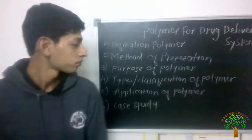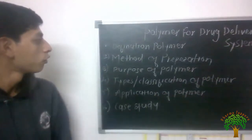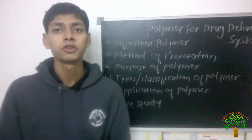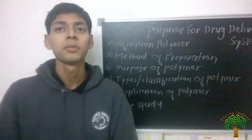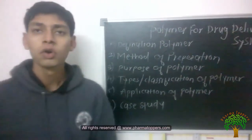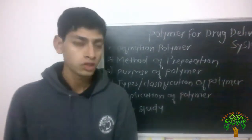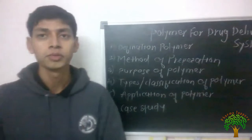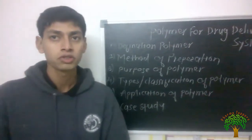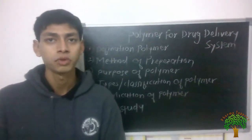Moving towards the method of preparation — there are mainly two types of methods for polymer preparation. Polymers can be formed by the polymerization process, and there are two types: addition polymerization and condensation polymerization.